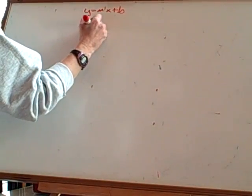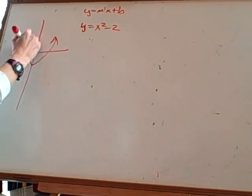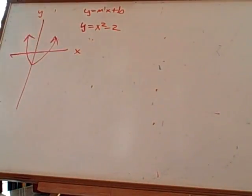Let's look at something else. Let's look at your y equals x squared minus 2, something like that. So, it's going to look about like this, this being your x and your y.